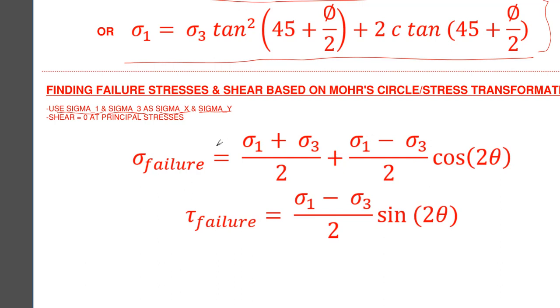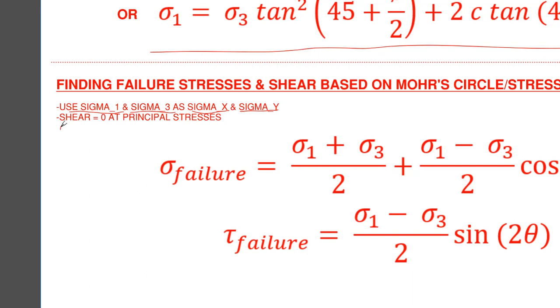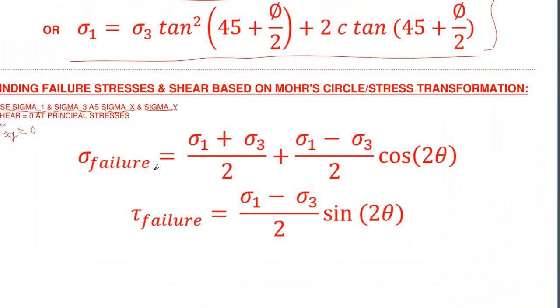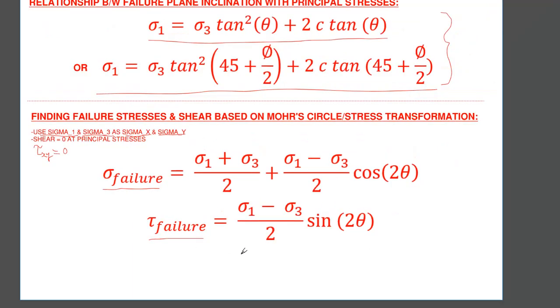And we'll cover the formula and how to derive this in detail. But essentially you can substitute sigma x and sigma y as sigma 1 and sigma 3, and your tau xy in that formula for stresses at an angle theta in a Mohr circle - the stress transformation formula - if you use tau xy equals 0. So that way, you can come up with what sigma and tau it takes for the failure to occur.